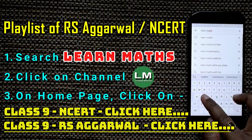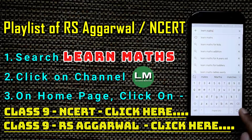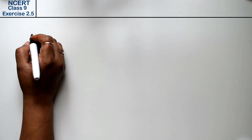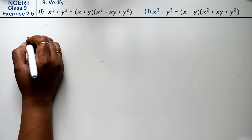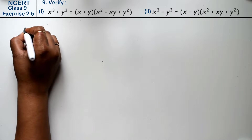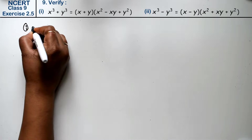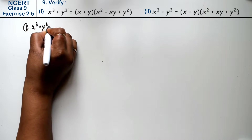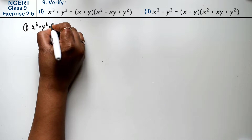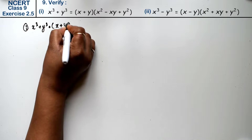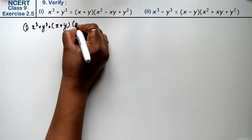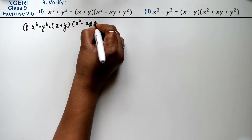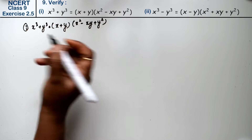Let's do question number 9 of Exercise 2.5, that is Polynomials. Question number 9, first part: verify x cube plus y cube equals x plus y times x square minus xy plus y square.